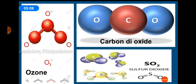A molecule containing three atoms is called a triatomic molecule. Examples are ozone, carbon dioxide, and sulfur dioxide. Ozone is formed by three oxygen atoms. Carbon dioxide is formed by one carbon and two oxygen atoms. Sulfur dioxide is formed by one sulfur and two oxygen atoms.